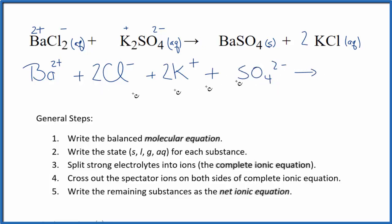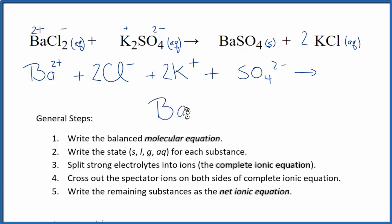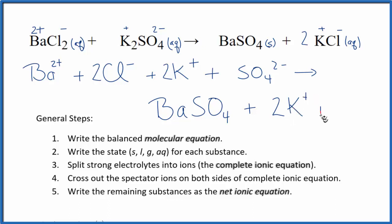So these are the reactants. For the products, when we write net ionic equations and we have a solid, we don't split the solids apart into their ions, because it's not dissolved — it's actually a solid at the bottom of the test tube. So we're just going to write BaSO₄ as a solid, plus 2K⁺ plus 2Cl⁻.